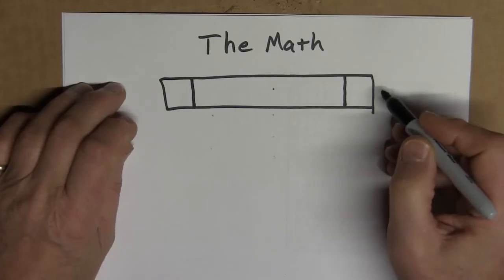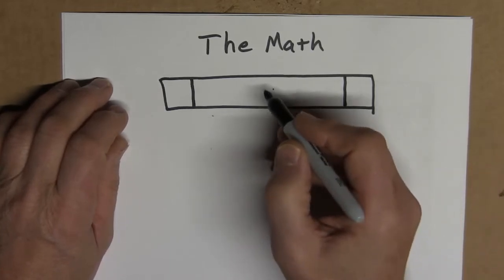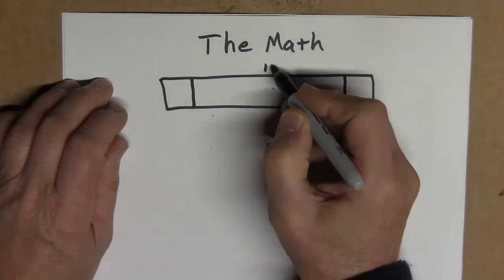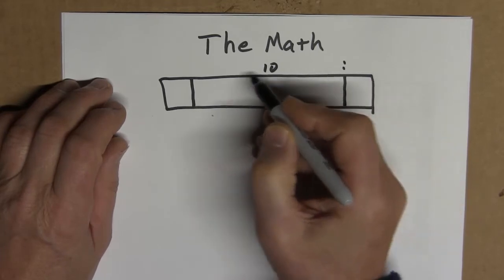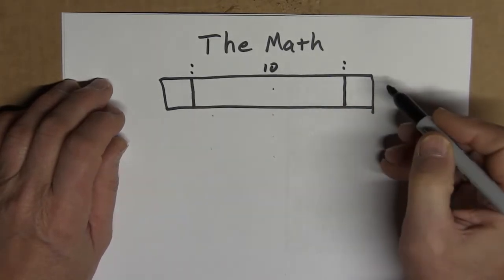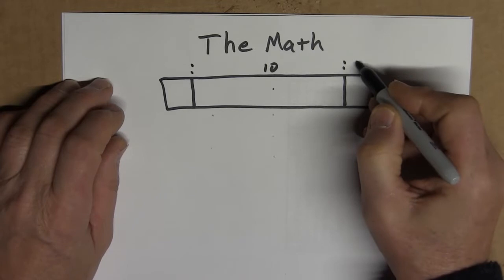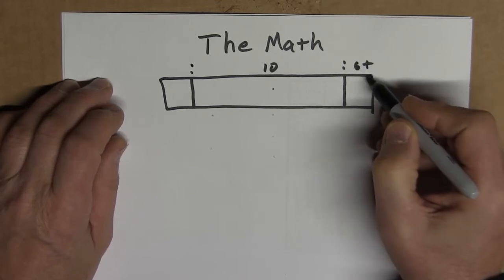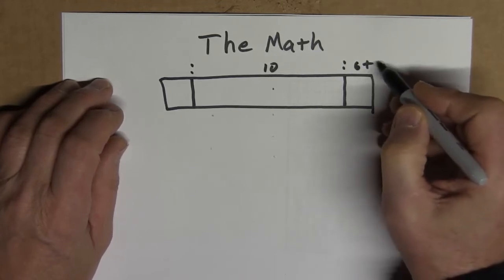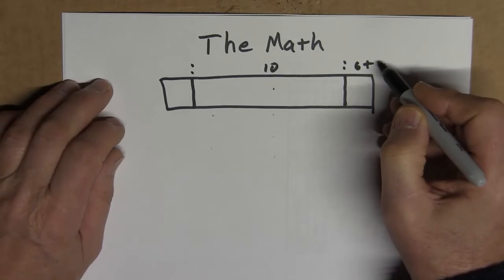So if you had a 10 by 14 foot log cabin and this is the inside wall, this would be 10 feet. And if you had a 6 inch thick log this would be 6 inches plus whatever overhang you want on the log wall.